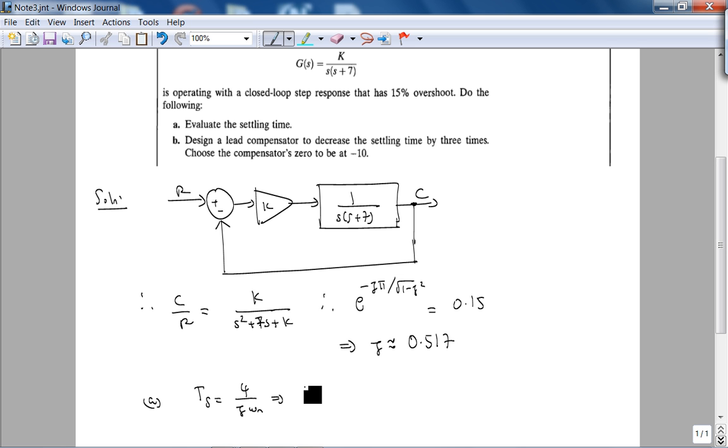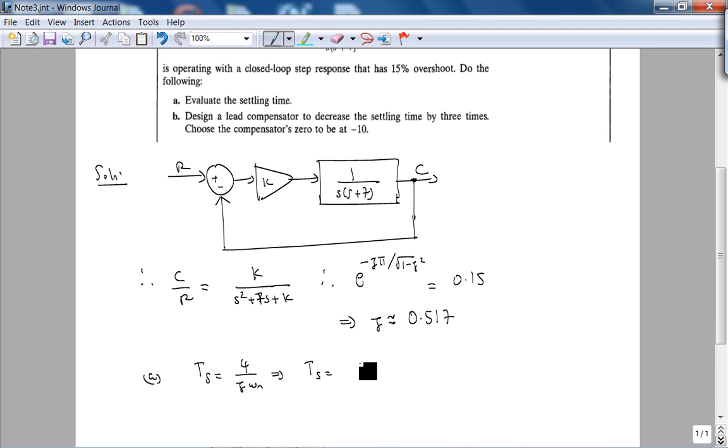This implies, but you know that this is zeta omega n, so if you multiply and divide by 2, so this is 8. Actually we didn't even need zeta for Ts.